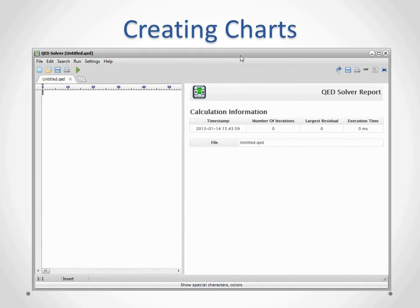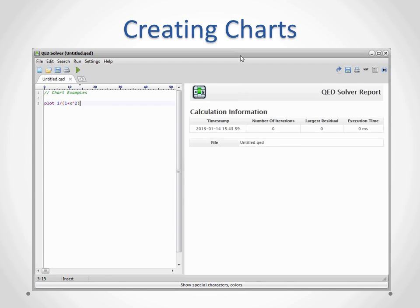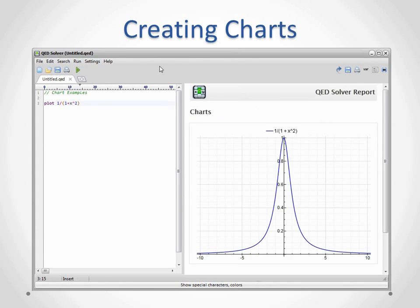Charts are created with the plot command. Creating a chart can be as simple as typing plot, followed by an expression, and clicking run. We'll start by entering plot 1 over 1 plus x squared. Then click run and view the chart.